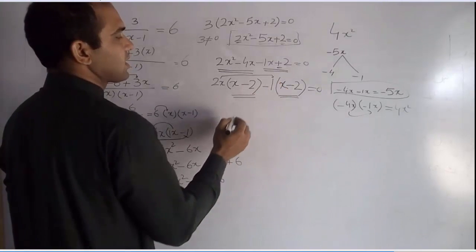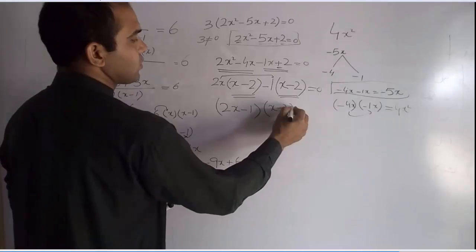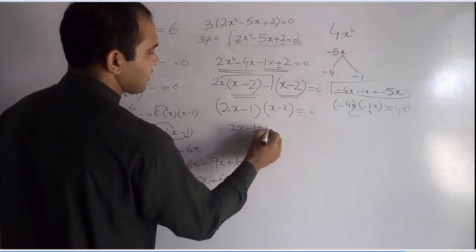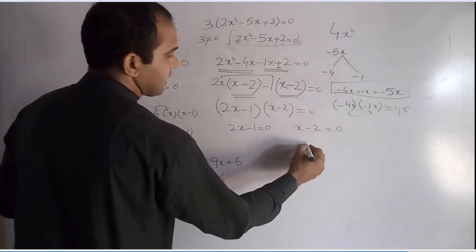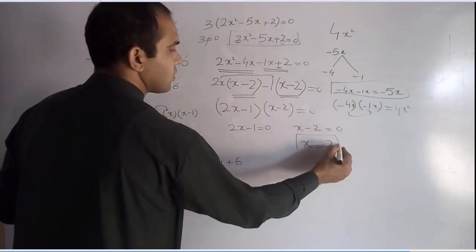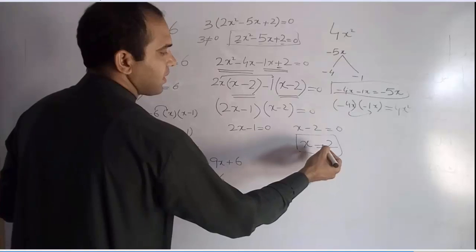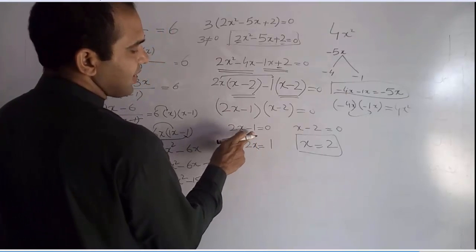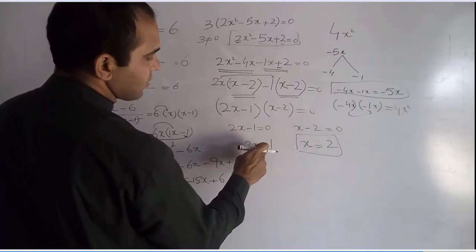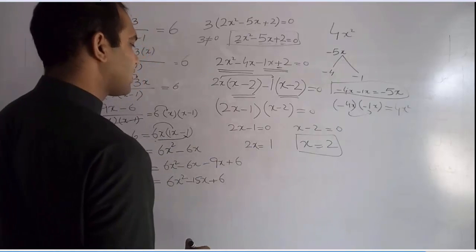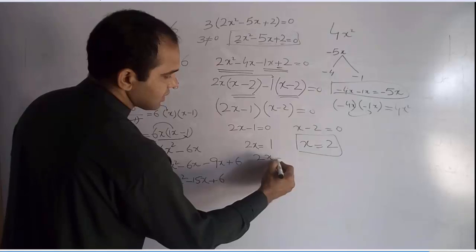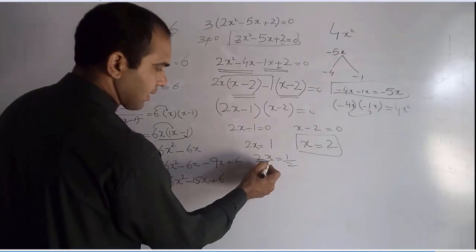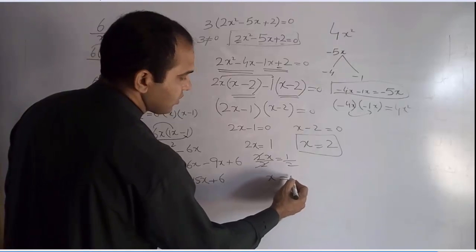Now join the factors: 2x minus 1 times x minus 2 equals 0. Setting each factor equal to zero: x minus 2 equals 0 gives x equals 2. For 2x minus 1 equals 0, shifting minus 1 gives 2x equals 1, then dividing by 2 gives x equals 1 over 2.